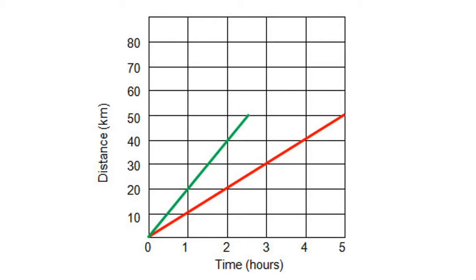What we can see are a set of numbers across the bottom and a set of numbers up the side. The numbers across the bottom — zero through to five — are labelled as being the time in hours. And the numbers up the side — zero up to 80 — are labelled as being distances in kilometres. We've got two lines: the green line is one particular journey and the red line is one particular journey. Could be two people driving or walking — they're two different journeys.